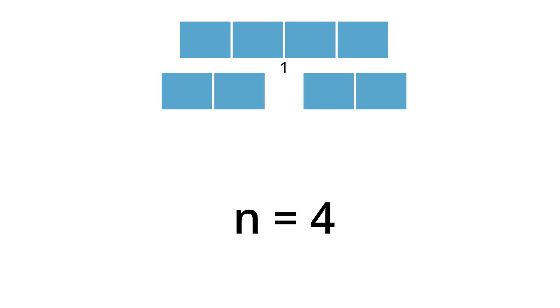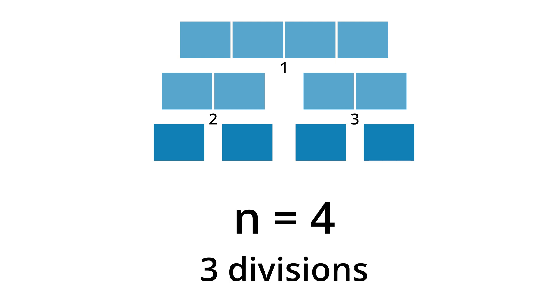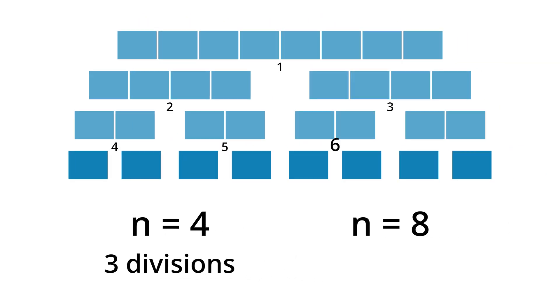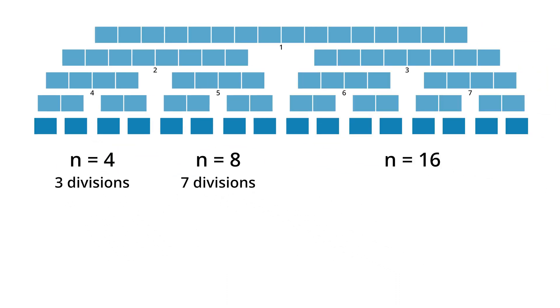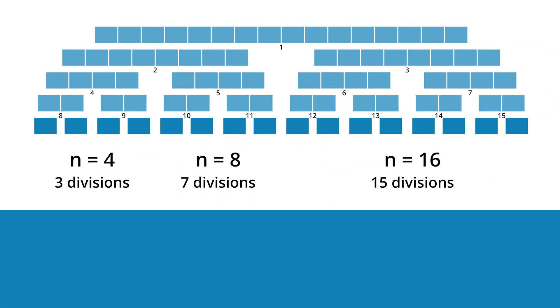Let's move on to the time complexity of merge sort. We'll look at the division phase first. We denote the number of elements to be sorted by n. With n equals 4, we have 3 divisions. At n equals 8, we have 7 divisions. And at n equals 16, we have 15 divisions. So the number of divisions is n minus 1.